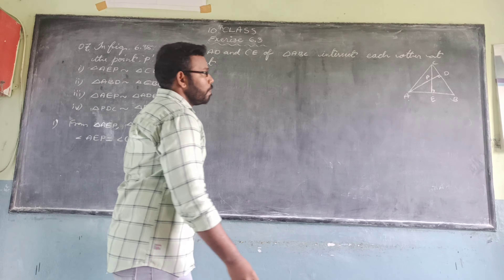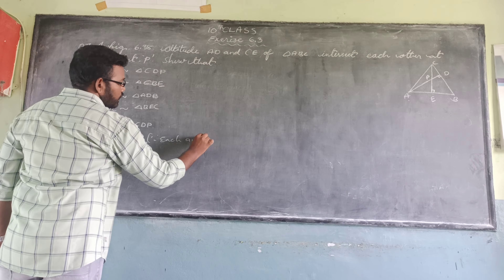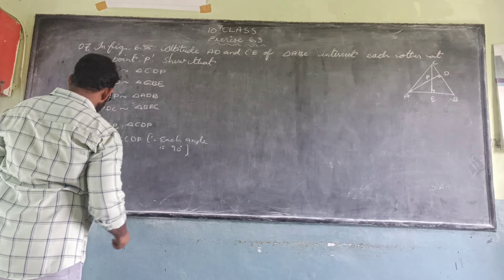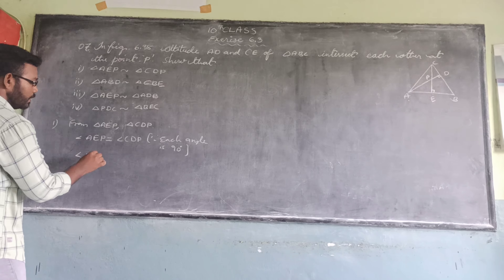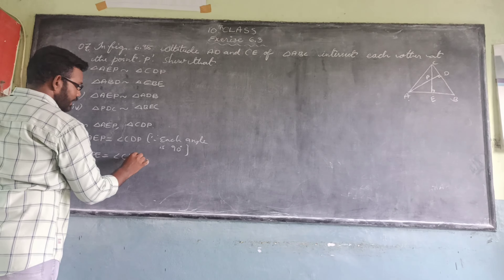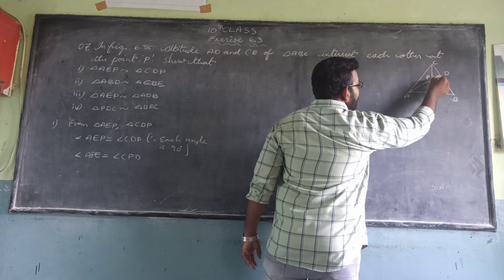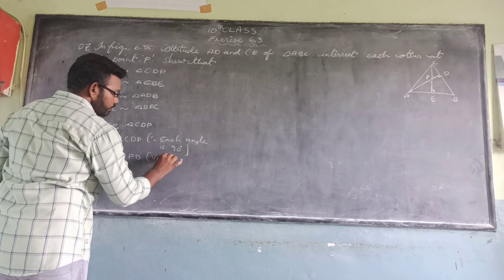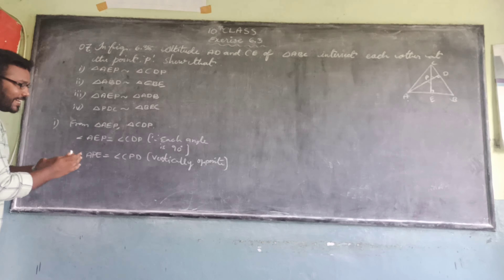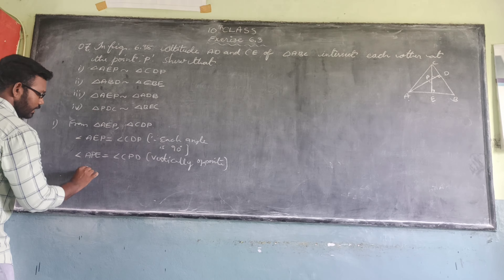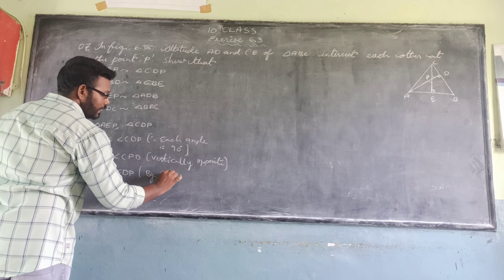Angle AEB is equal to angle CDP because each angle is 90 degrees. Also, angle APE is equal to angle CPD because they are vertically opposite angles. By using the AA (angle-angle) criterion, we can say that triangle AEB is similar to triangle CDP.